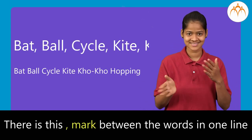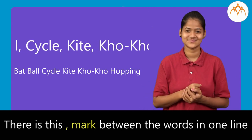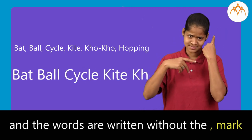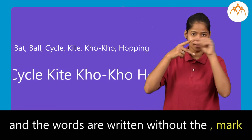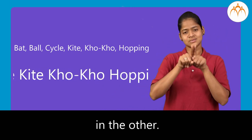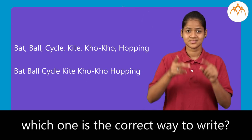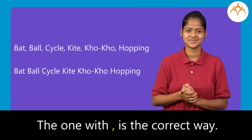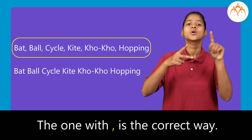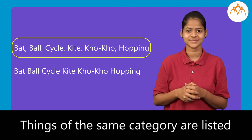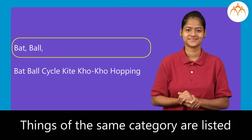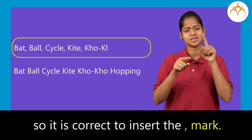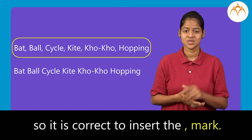There is a comma mark between the words in one line and the words are written without the comma mark in the other. Tell me which one is the correct way to write. The one with the comma is the correct way.